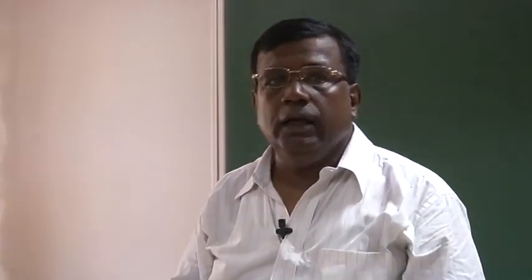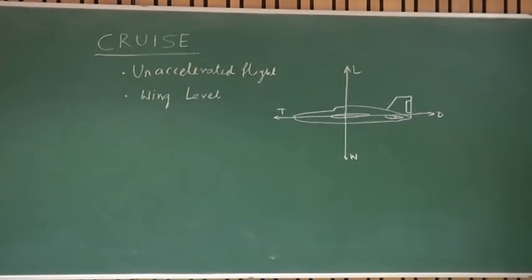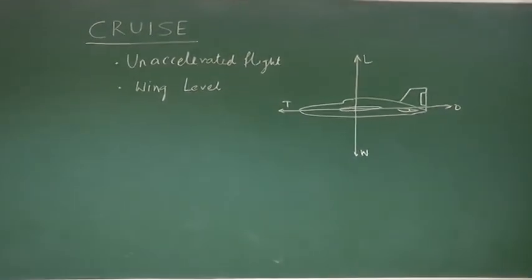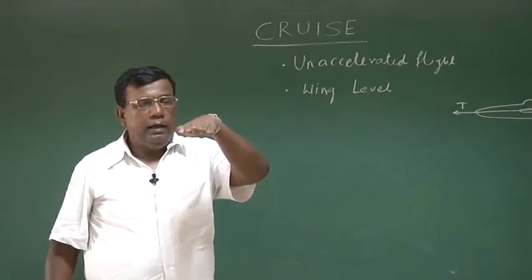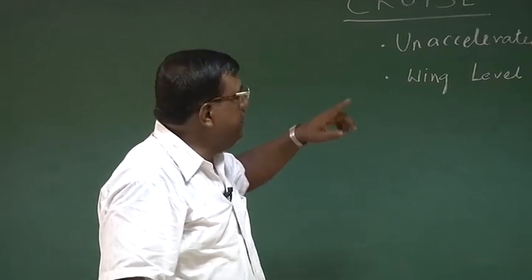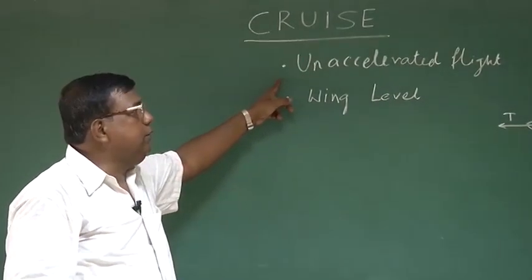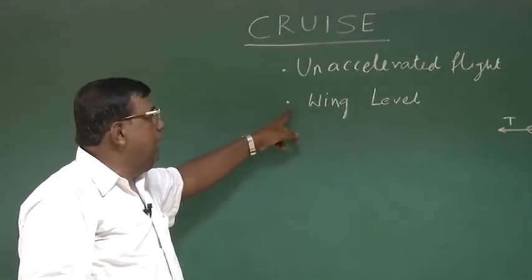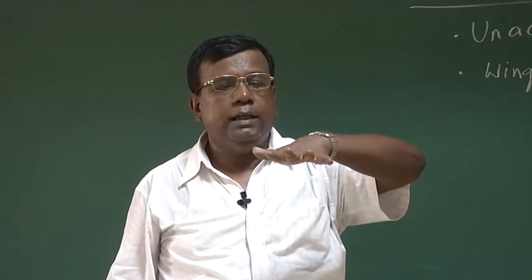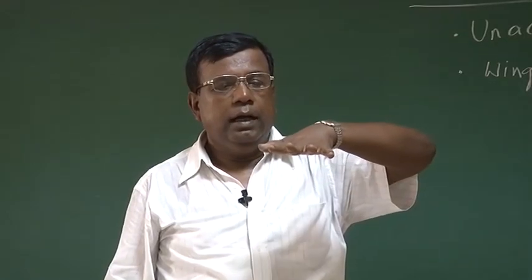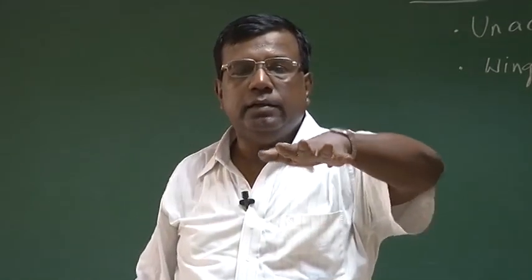Today we will be discussing one of the important phases of an airplane's flight: cruise. When I say cruise, the airplane will be going in a straight line, and it will be unaccelerated. All the forces and moments will be balanced, and wings level — that is, the wings will not have any orientation. This is a straight and level flight, which is typically a cruise flight.